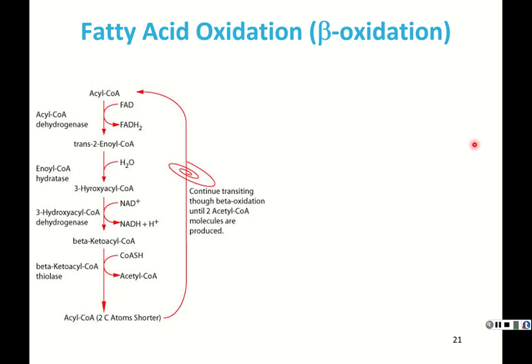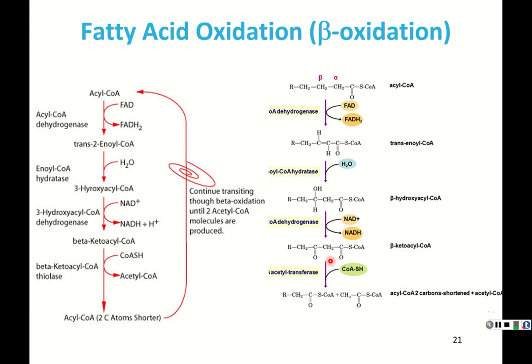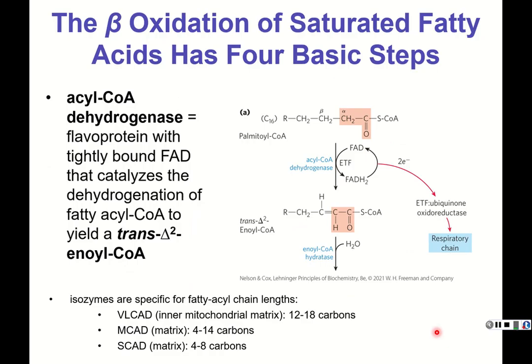There are several ways to visualize this — a circular cycle diagram or a linear representation. The most important thing is to track the alpha and beta carbons and what happens at each step, rather than memorizing every detail of each representation.